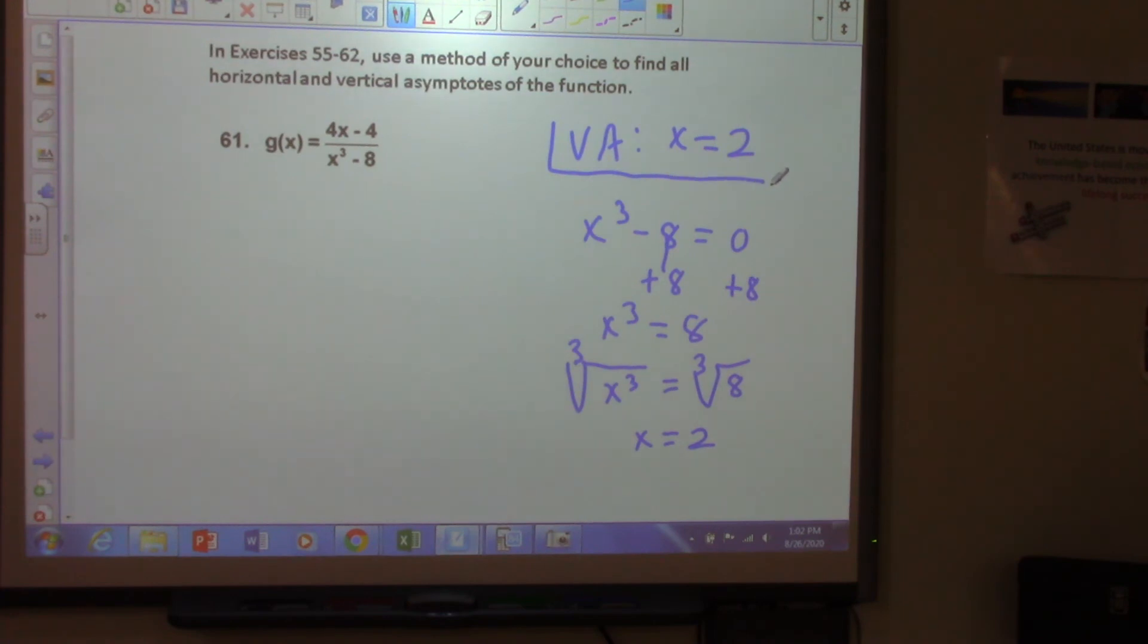Now, why is it not plus or minus 2? Why is it not plus or minus 2? If we had x squared minus 4 equals 0, our solutions would be plus or minus 2, right? But why is this not plus or minus 2? Because we took the same thing. We took square root equals 4, square root, square root. We have x is equal to plus or minus 2. Why is this not plus or minus 2?